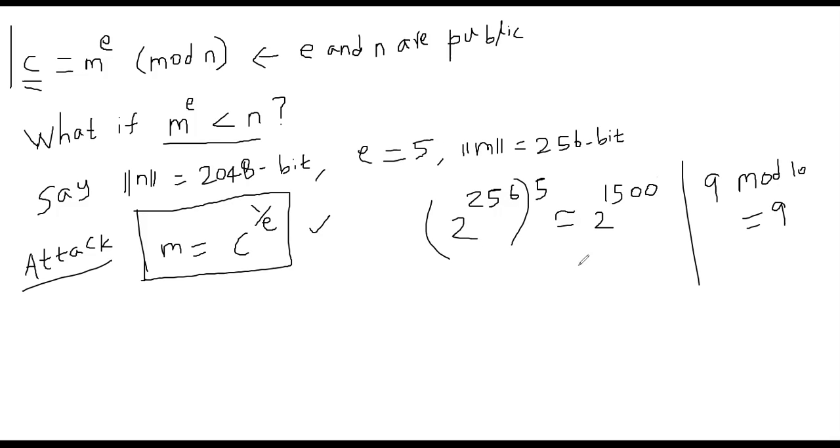See, 2 power 1500 is still less than 2 power 2048 because you're going to do mod with the 2048 bit number. That means you're going to have no effect when you do mod n. So the attacker is essentially taking the c that you're sending, taking the e-th root. Let's do a demo.